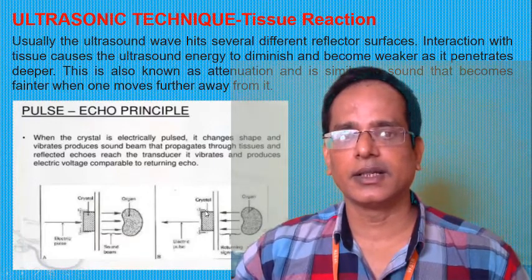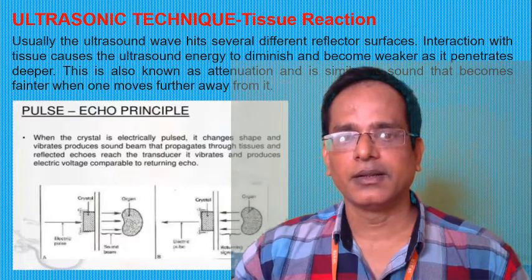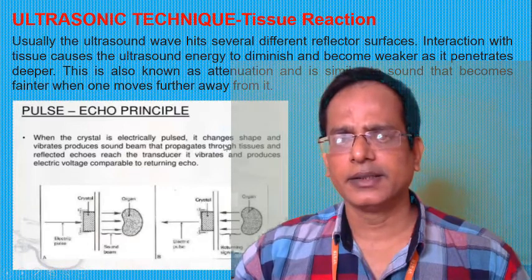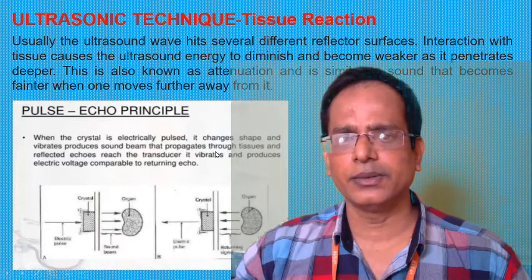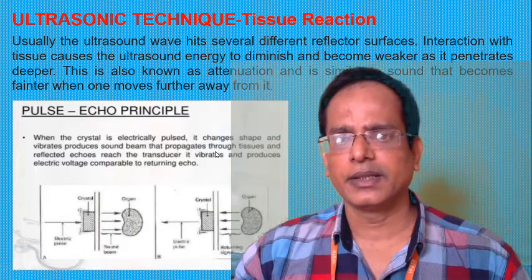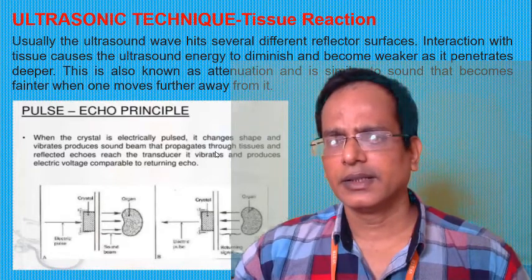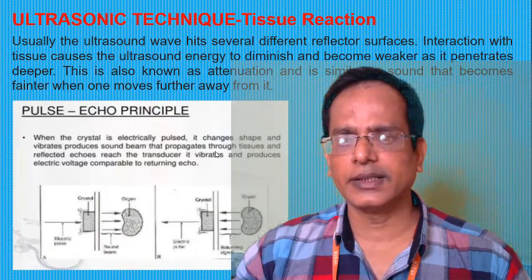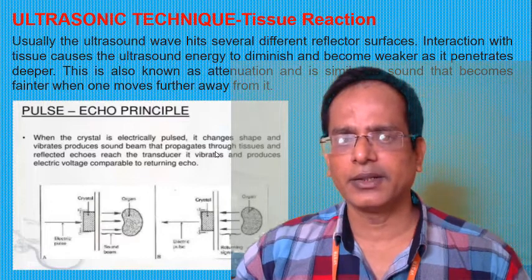This is the pulse echo principle. When the crystal is electrically pulsed, it changes shape and vibrates, producing a sound beam that propagates through the tissue. Reflected echoes reach the transducer, which vibrates and produces an electric voltage compatible with the retained echoes.